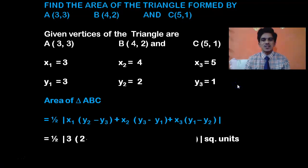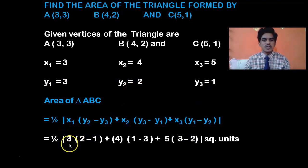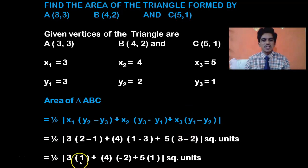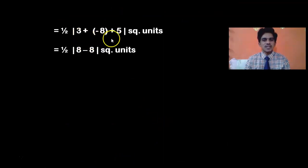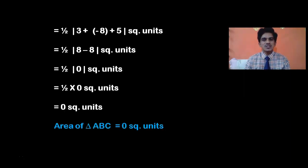By substituting the values: 1/2 × |3(2 − 1) + 4(1 − 3) + 5(3 − 2)|. That gives 1/2 × |3(1) + 4(−2) + 5(1)| = 1/2 × |3 − 8 + 5| = 1/2 × |8 − 8| = 1/2 × |0|. The absolute value of 0 is 0, so this is 1/2 × 0. The area of the triangle is 0 square units.